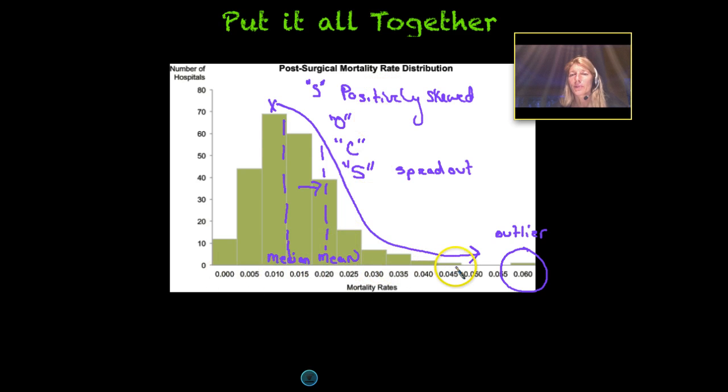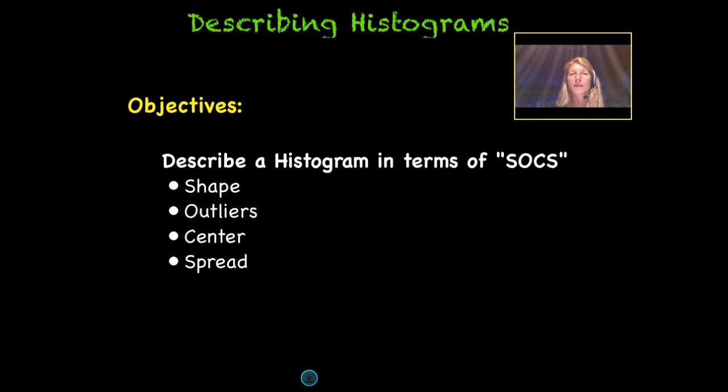And I say that just because in a situation like this, mortality rates, we would assume that they would be very low and not so high. And that seems, when you go all the way up to 5%, that seems like it becomes pretty spread out. All right. And that concludes our lesson on describing histograms.